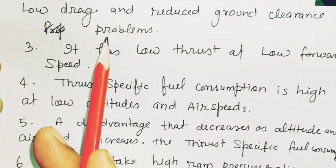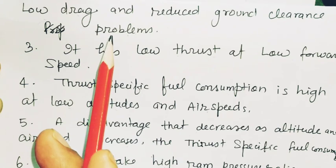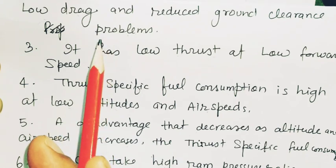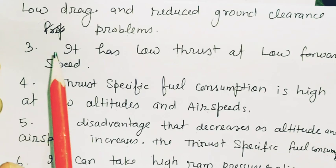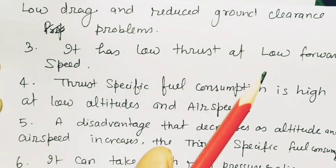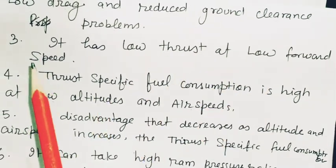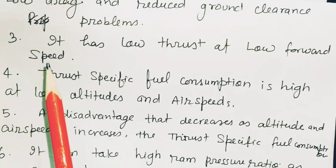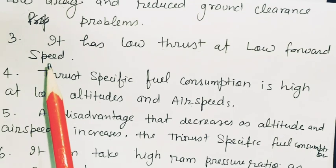If frontal area is more, then drag will be more. If frontal area is less, then drag will be less. Third point: it has low thrust at low forward speed, means when the aircraft is operated at low aircraft speed, it will have low thrust.